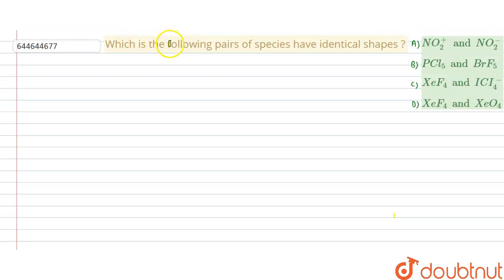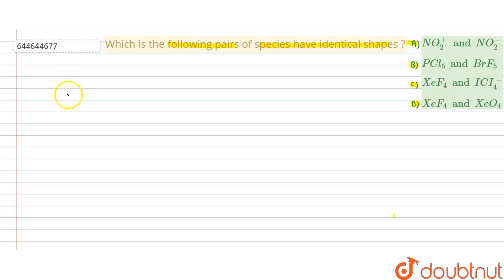Hello students. The given problem is: which of the following pairs of species have identical shape? These are the four options A, B, C and D, and we have to check which of the following options is correct.